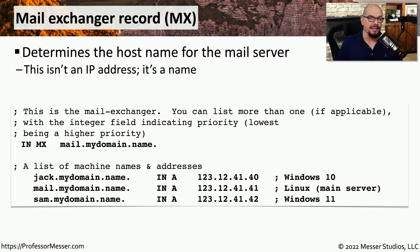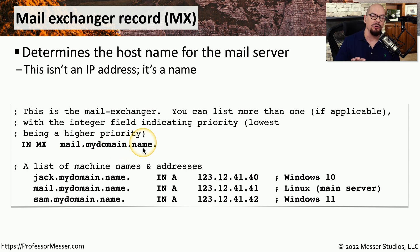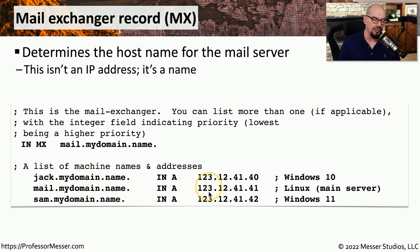Another important record in DNS is where all of your emails should be delivered. This is a mail exchanger record, or an MX record. To make this work, you would need two separate records inside of your DNS server. The first would be the MX record — you can see the mail exchange record in this server points to mail.mydomain.name. To obtain the IP address for mail.mydomain.name, we would need to look at an A record, which shows the IP address 123.12.41.41, and it is a Linux server.